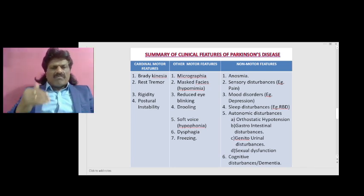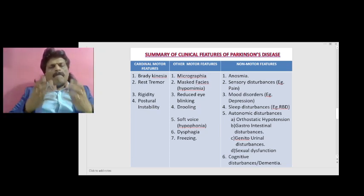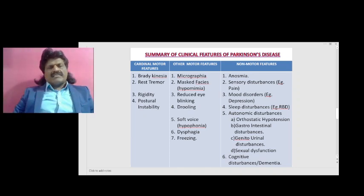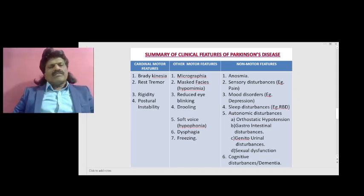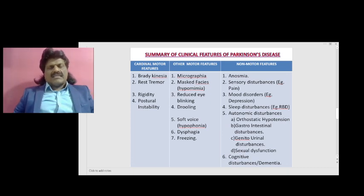The other motor features include micrographia — where handwriting becomes small — masked face (hypomimia or expressionless face), reduced eye blinking, drooling of saliva due to decreased swallowing, soft voice (hypophonia), dysphagia, and freezing due to simultaneous contraction of agonist and antagonist muscles.